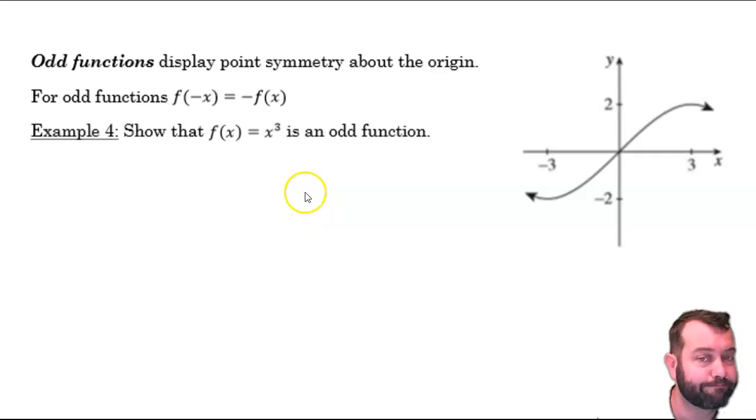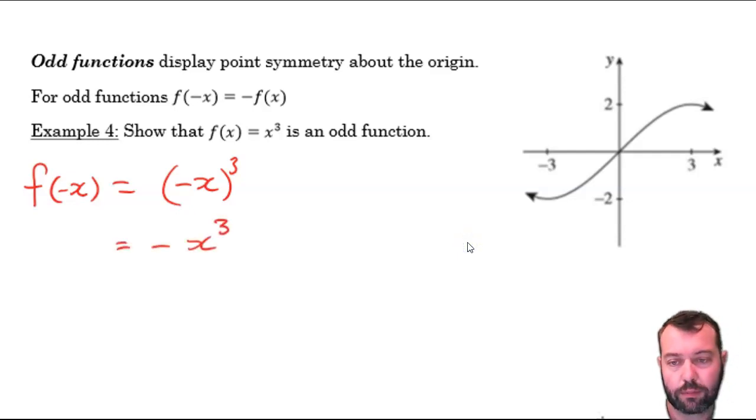Here's an example. We want to show that x to the power of 3 is an odd function. And perhaps we know what that graph looks like, and we have a fair idea from thinking about that, picturing it in our minds that it will be an odd function, but let's show that it is. So we substitute negative x for x. Negative x cubed is the same as the negative of x cubed.